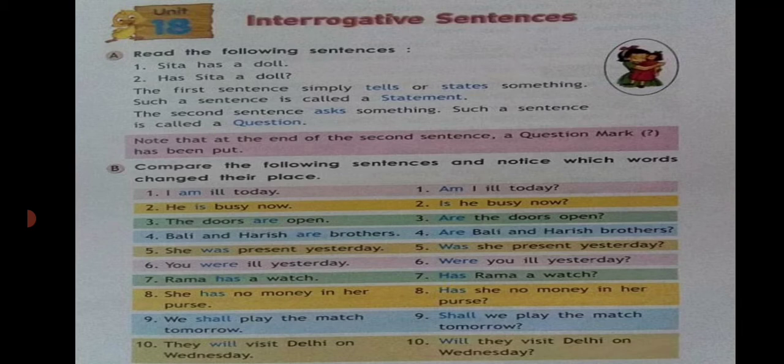The next examples: 'He is busy now.' — 'Is he busy now?' 'The doors are open.' — 'Are the doors open?' 'She was present yesterday.' — 'Was she present yesterday?' 'You were ill yesterday.' — 'Were you ill yesterday?' 'Rama has a watch.' — 'Has Rama a watch?'